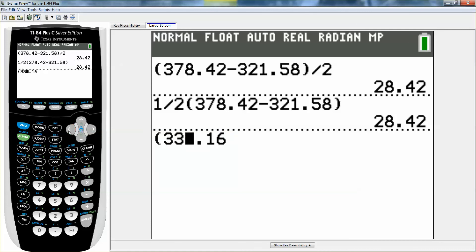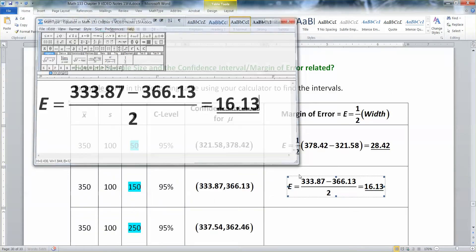333.13. Oh, no. Oops. My fault. 366.13 minus 333.87. I'm just having typing problems. And divide it in half. There we go. 16.13. So I was right there.